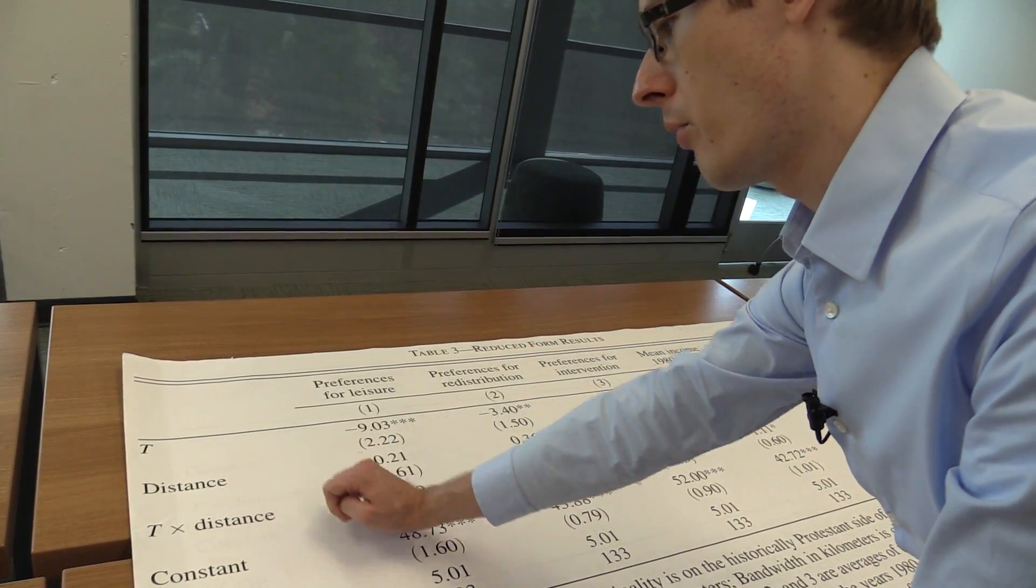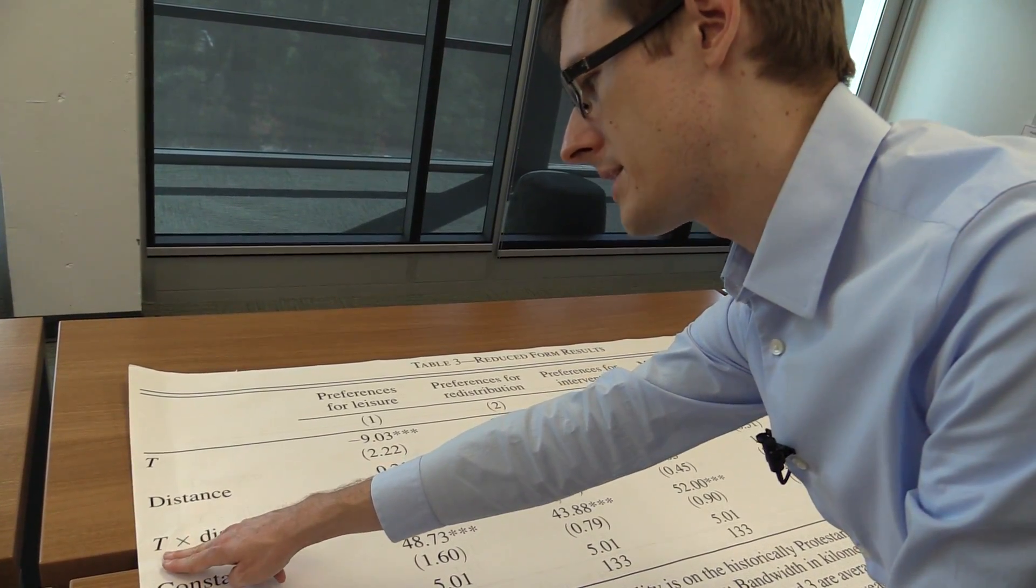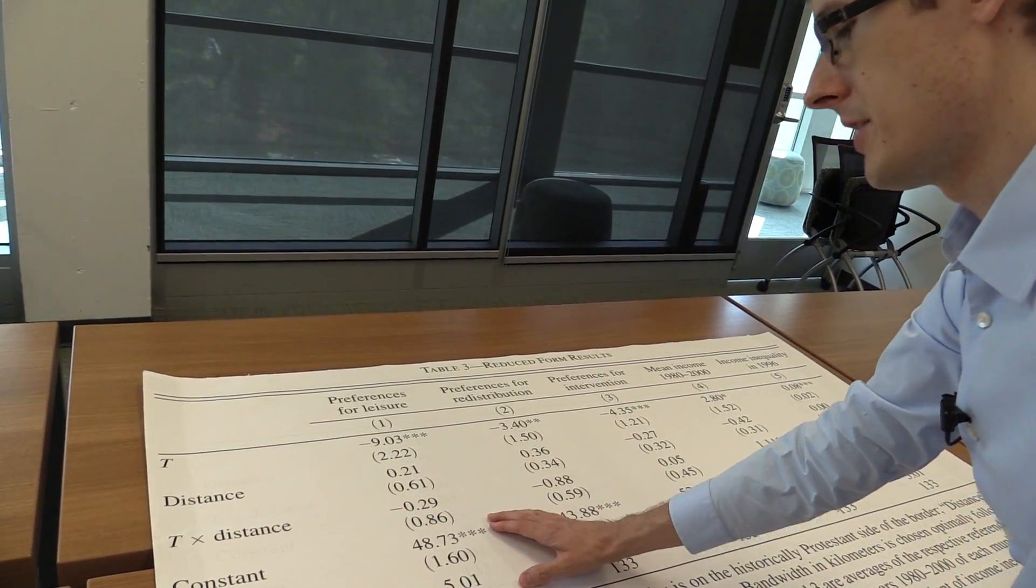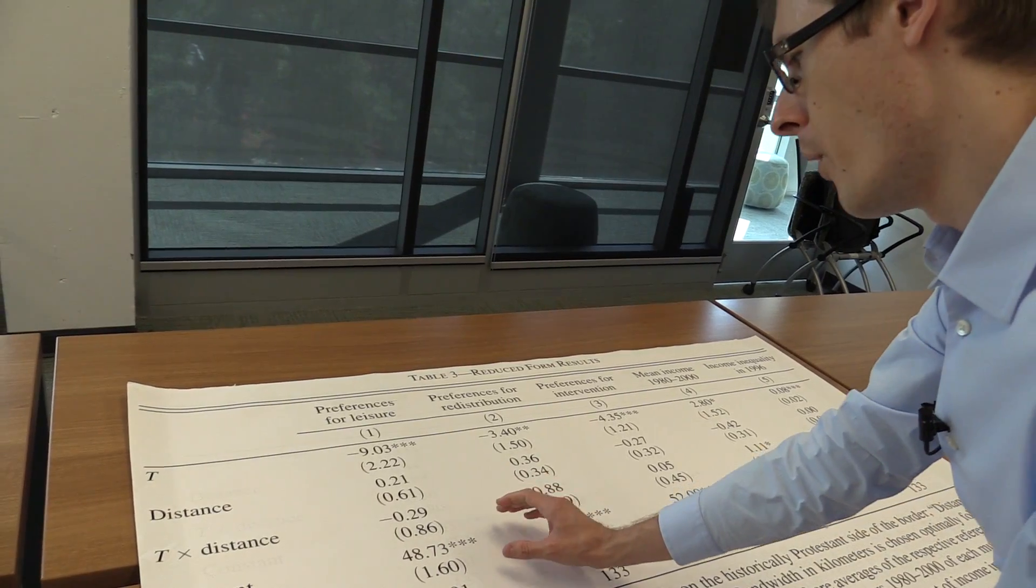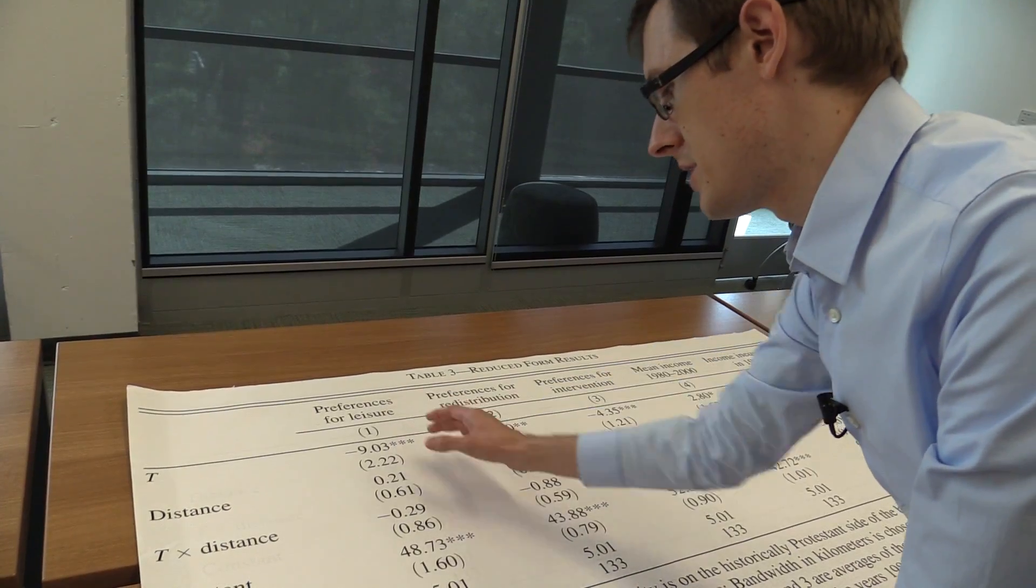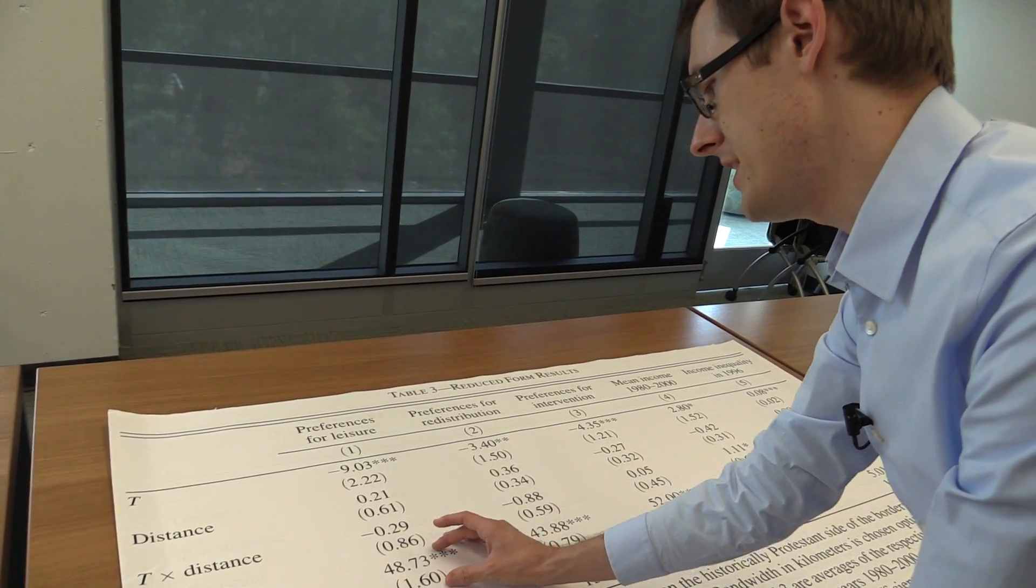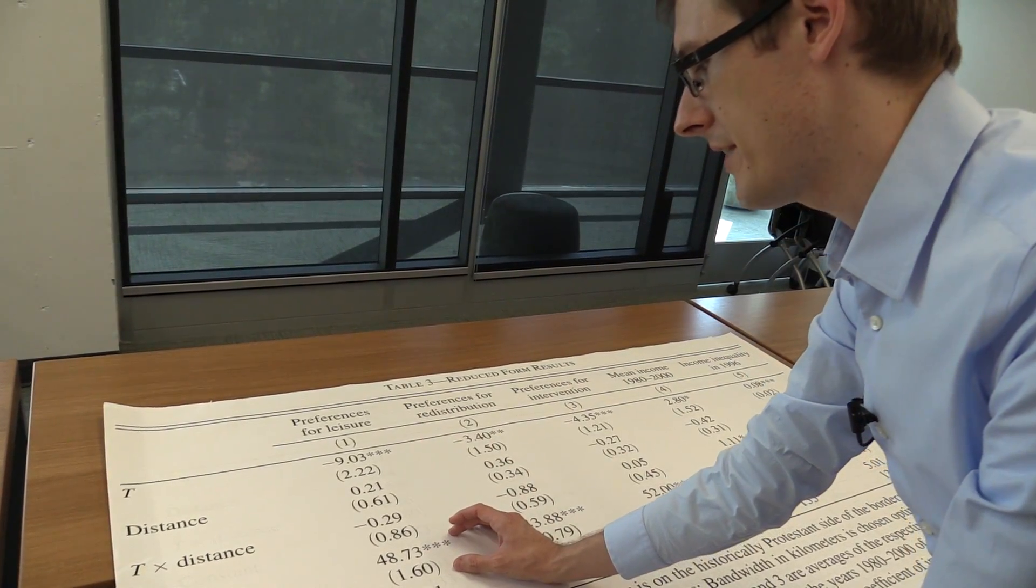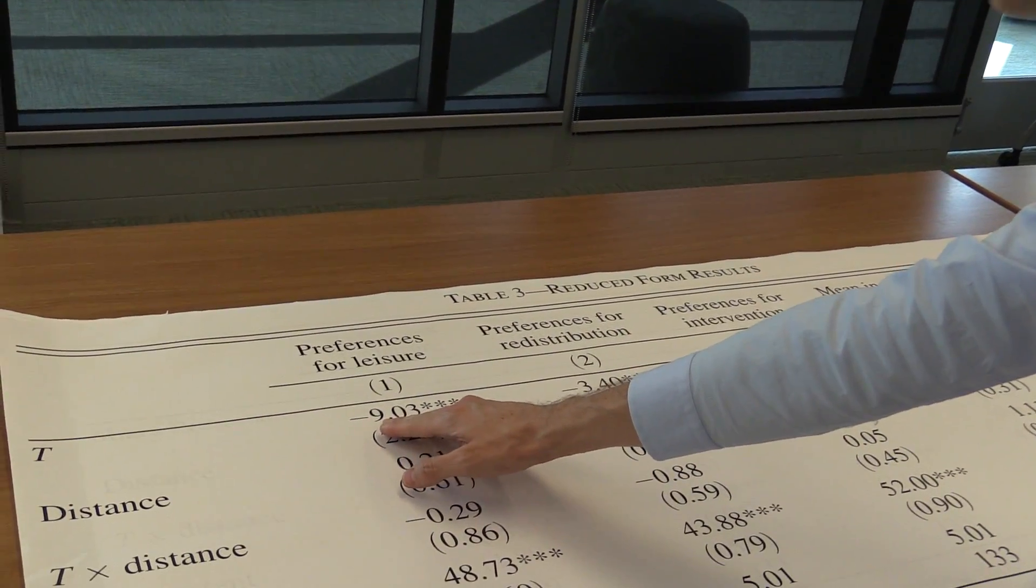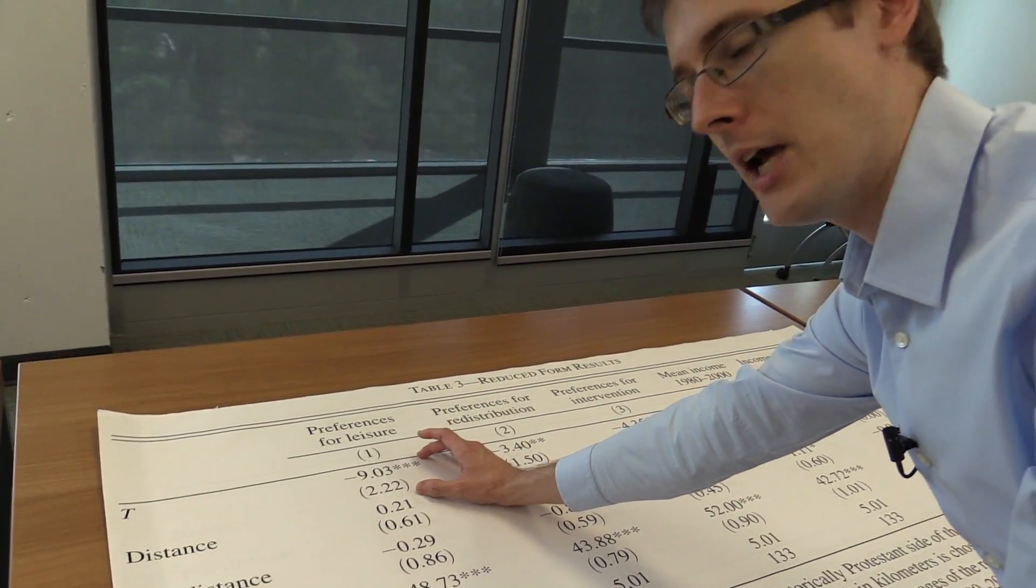That's what this T is. How close you are from the border. An interaction term between whether you're on one side of the border and how far you are. And then a constant. So that's what these numbers here are. So what is our finding? First, the constant here tells us the preferences for the Catholics, because T means being on the Protestant side. So this is 48% preferences for leisure for being Catholics. And then being on the Protestant side drops your preferences down by 9%. So that's exactly the same number we saw in the picture, now just in table form.